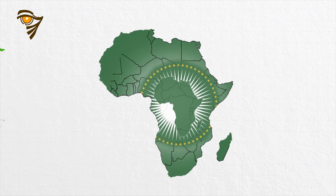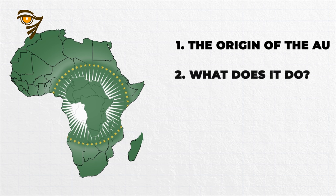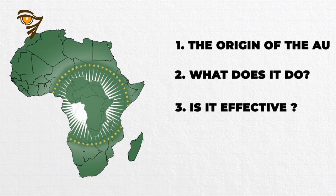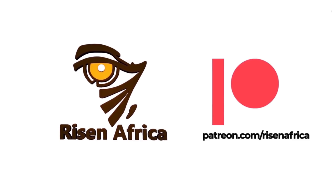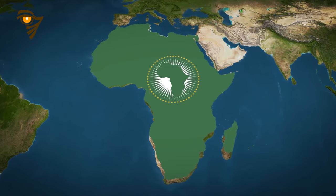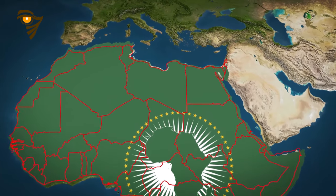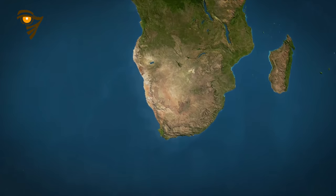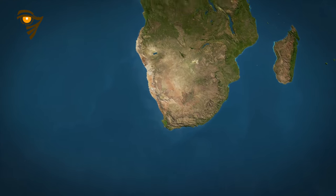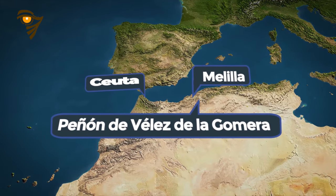In this video, we are going to talk about the origins of the African Union, what it does, whether it is effective, and what its future might hold. Welcome to Reason Africa. Member states of the African Union cover almost the entirety of continental Africa and several offshore islands, except for several territories held by Spain like Ceuta, Melilla, and Peño de Vélez de la Gomera.